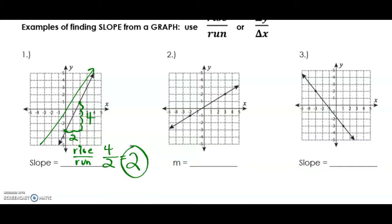The slope for the first graph is positive two. Let's look at the next example. Our line is rising from left to right, so we know our slope is going to be positive. Let's set up our fraction. The rise is one, two, three — and this point lines up with the other point on the graph. So the rise is three and the run is one, two, three, four, five. The rise over run — the slope — is three fifths.